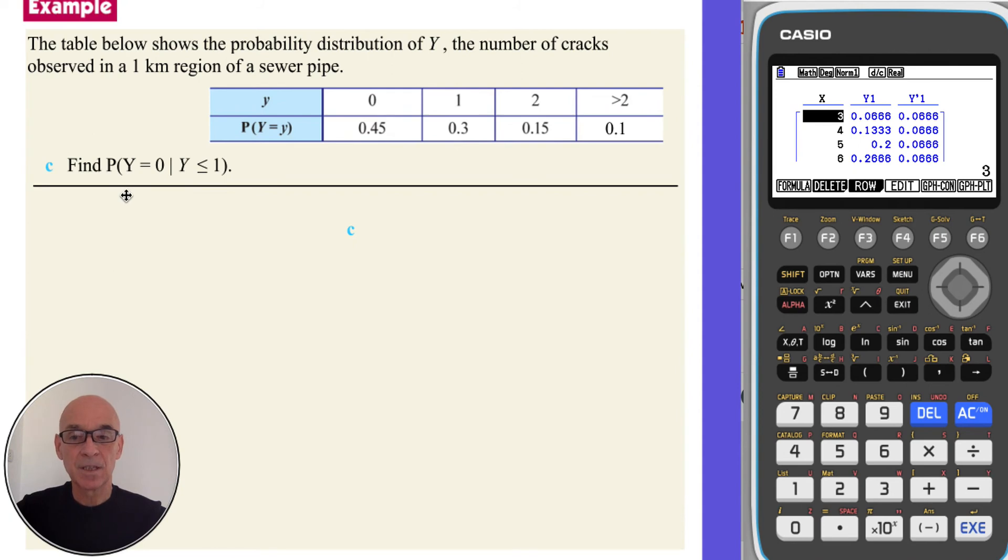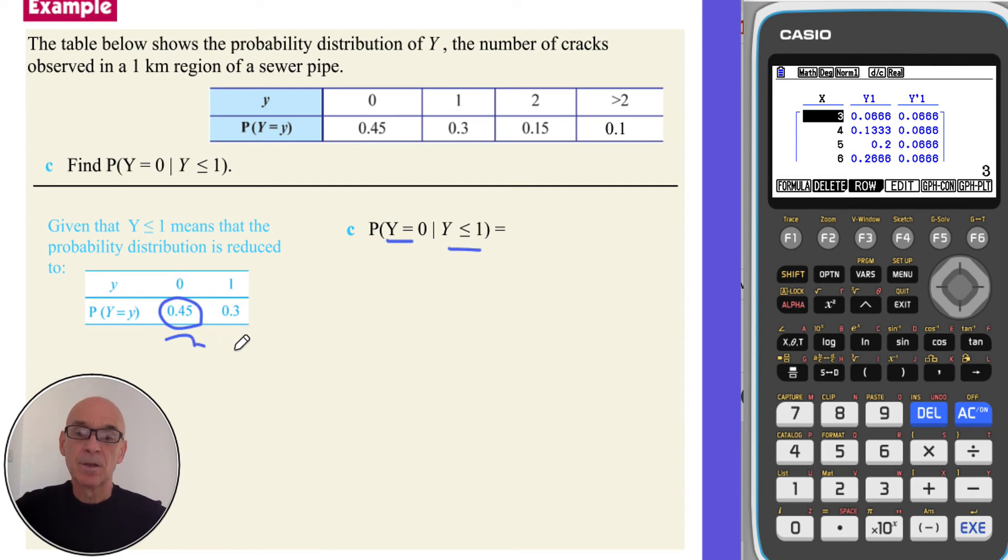In part C, we're asked to find the probability that Y is equal to 0, given that we know Y is less than or equal to 1. So if you remember, this is a conditional probability question. This means that the probability distribution is reduced from 100% down to 75%, or 0.75, as shown. And the probability that Y is equal to 0, given that Y is less than or equal to 1, is equal to 0.45 out of 0.75. And that's equal to 0.6.